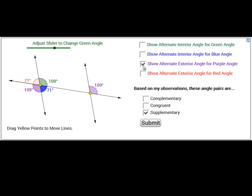If I show the alternate exterior angle for the purple angle, those also match. And the alternate exterior angle for the red angle also matches. So based on these, since the sizes are the same, I would guess that they are congruent.